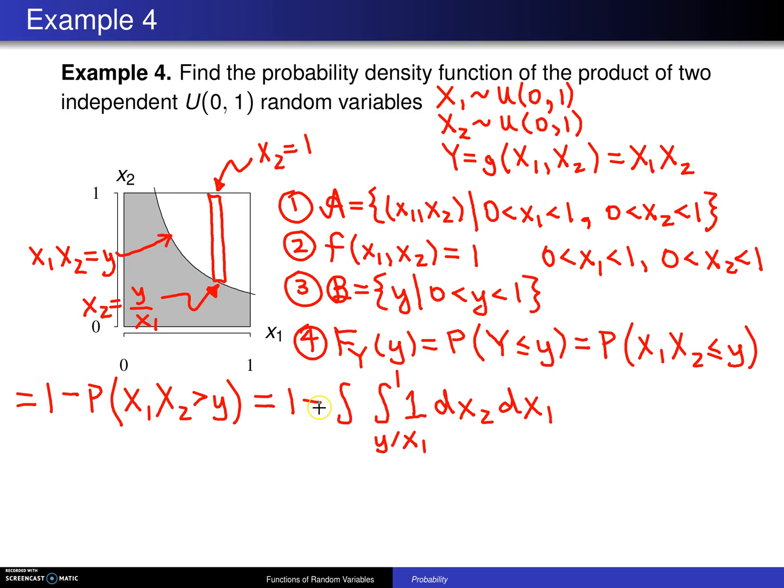Now these strips begin over here, and they begin at the value y. And the way you determine y is you solve the two simultaneous equations x2 equals 1 and x1*x2 equals y. And you will get this point. And this point right here is at y,1, which means the strips will start at y, and they will end out here at 1.